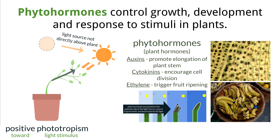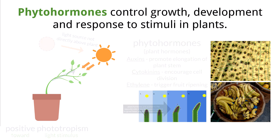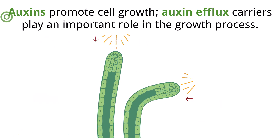Plants also have cytokinins, which encourage cell division, and ethylene, which triggers fruit ripening. These hormones are plants' internal communication system. Auxin, in particular, is essential for phototropism.